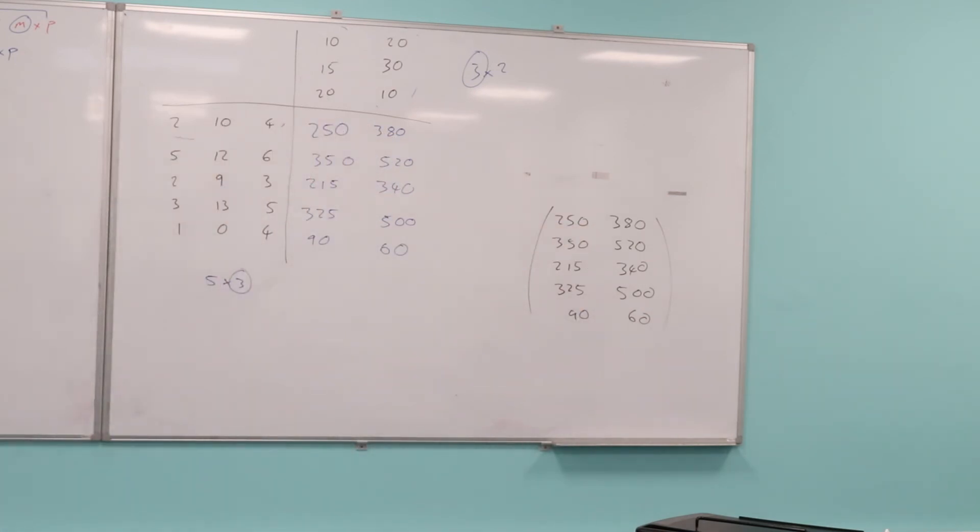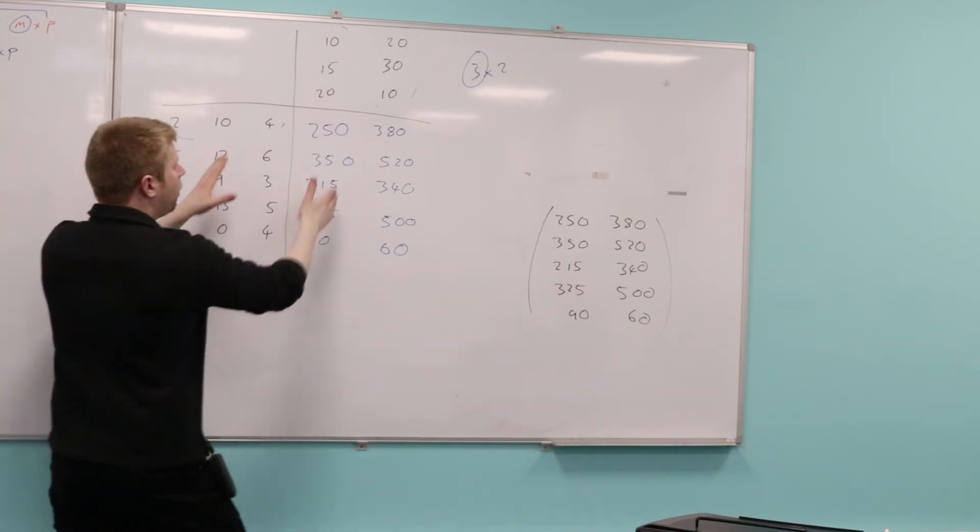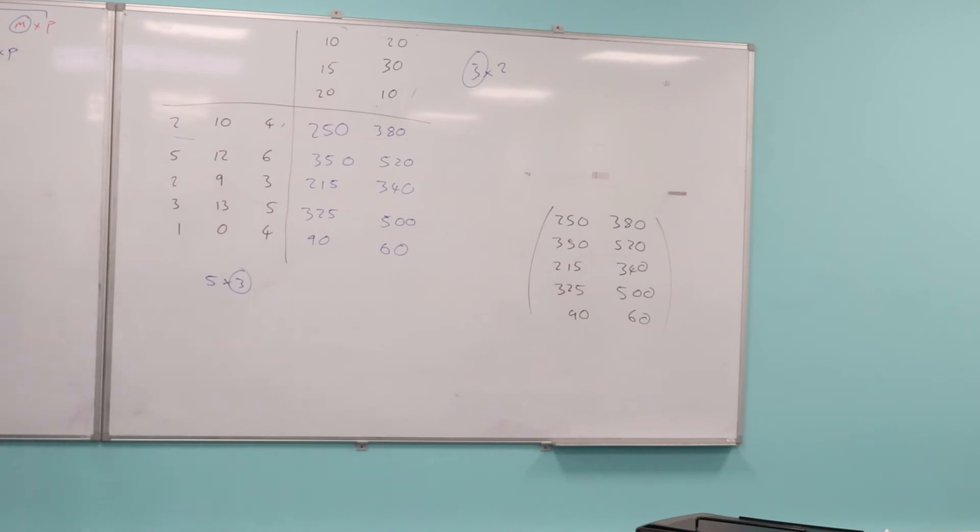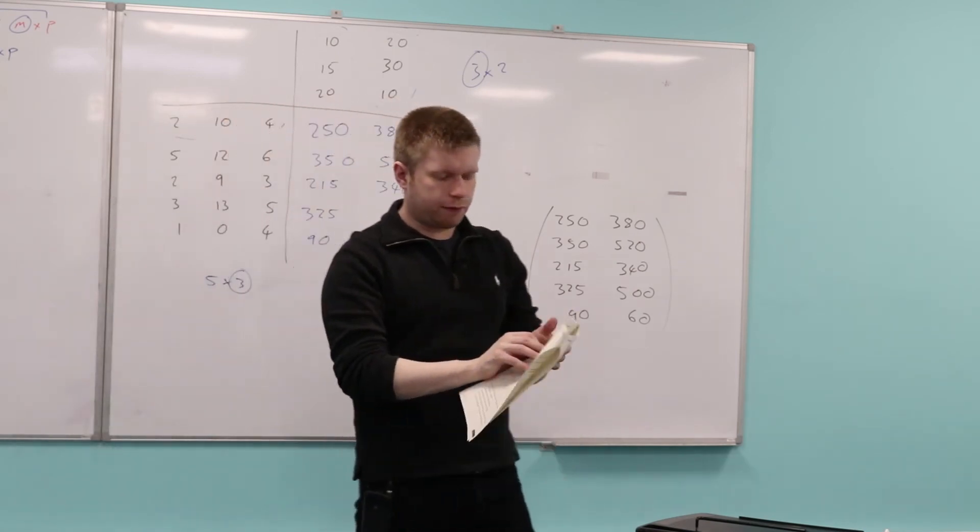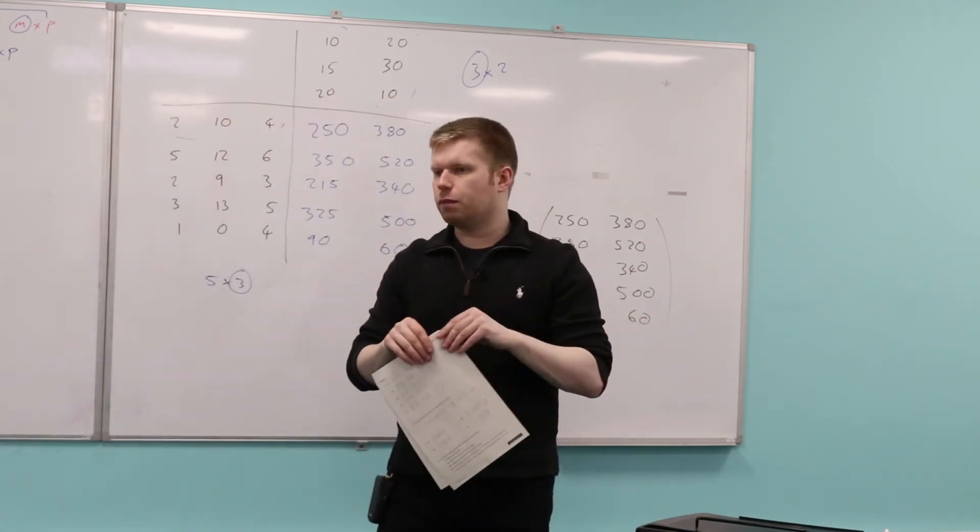So when you do your matrix multiplication, write it out like this. I only came across this technique a few months ago. And I really like it. Before, I literally had to work with this and think about it in a weird way. If you write them out like this, it's really easy to see what's happening. So hopefully you've got a bit more intuitiveness about what's happening with matrices.